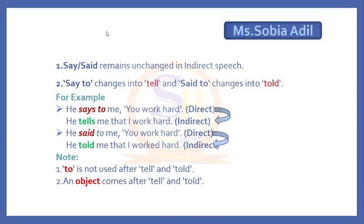While changing direct into indirect speech, if there are verbs like 'say' or 'said' in the reporting speech, 'say' or 'said' remain the same. But if there is 'say to', you will change it into 'tell'. And 'said to' will change into 'told'. For example: 'He says to me, you work hard.' While changing, it becomes: 'He tells me that I work hard.'